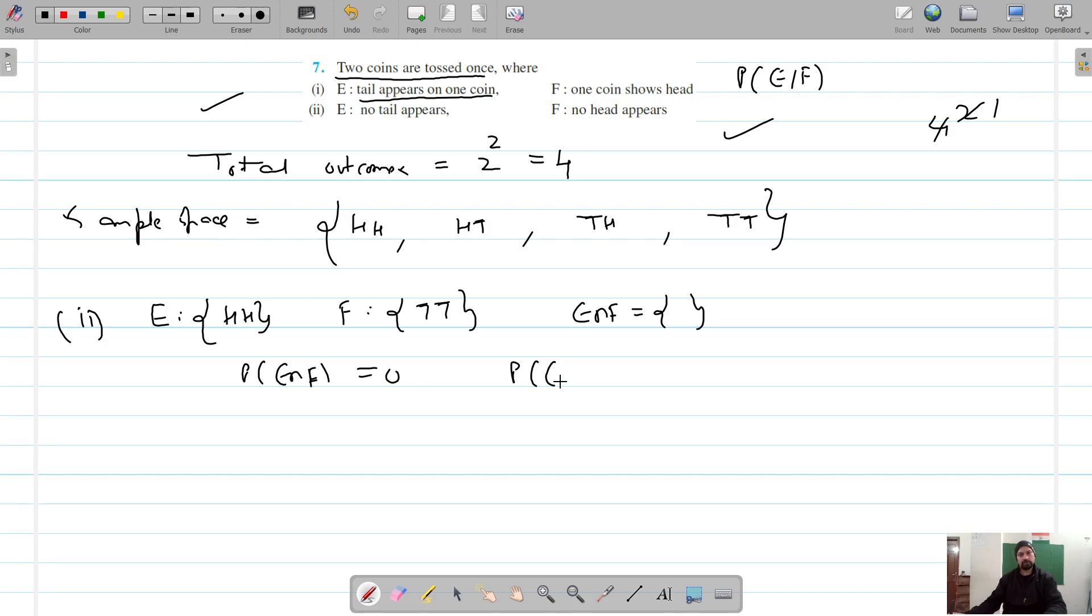Therefore, the probability of E given F, which equals P(E∩F) divided by P(F), should equal zero divided by P(F), which equals zero. So that is the answer for the second part.